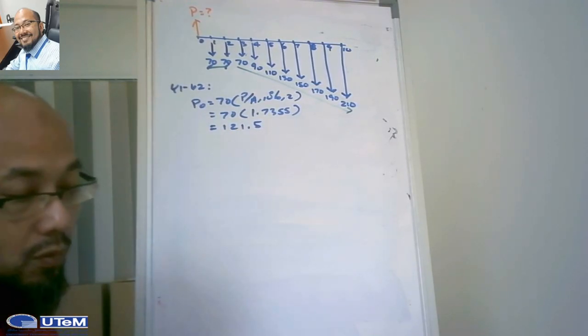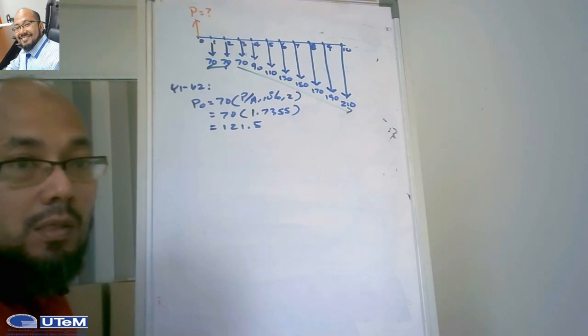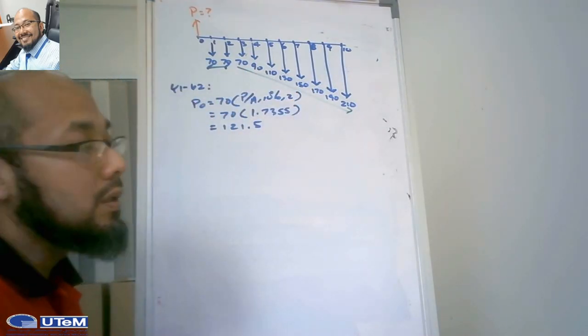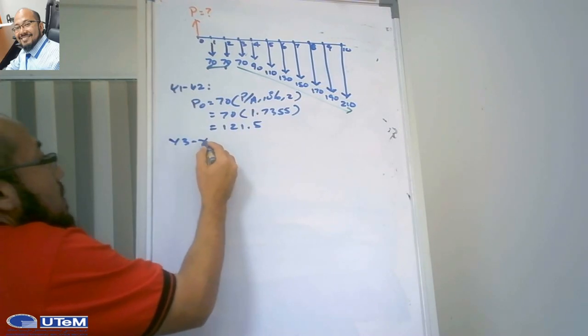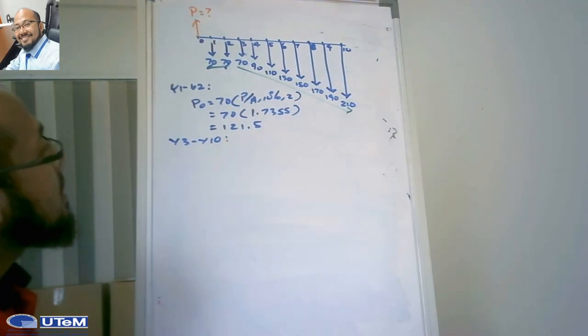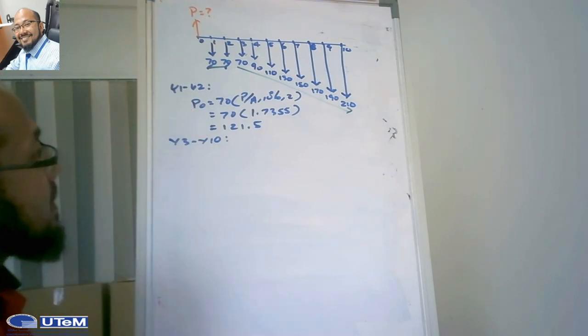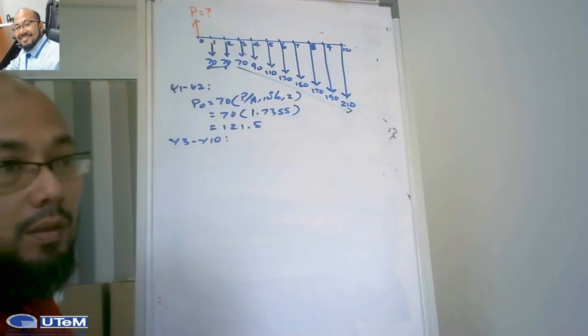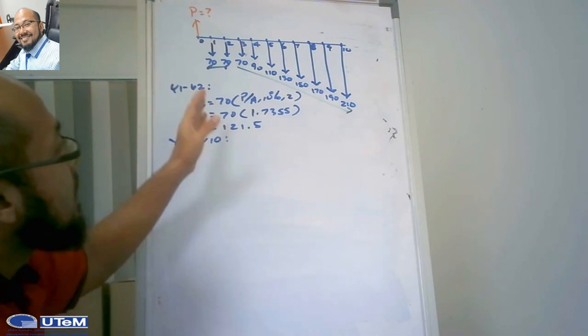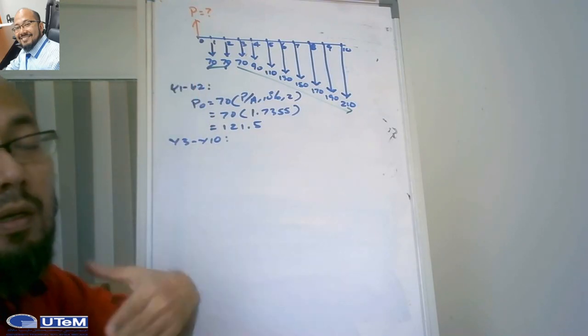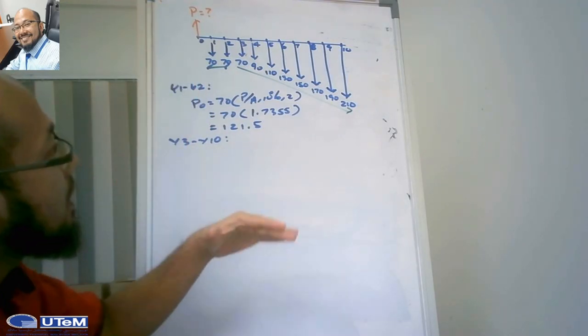The next cash flow series is from year 3 to year 10. In this case it involves a gradient. The gradient factor is defined as the same value or same percentage increase in consecutive periods. We can see from the 70 dollar at year 3, it consistently increases with the same value of 20 ringgit until year 10.